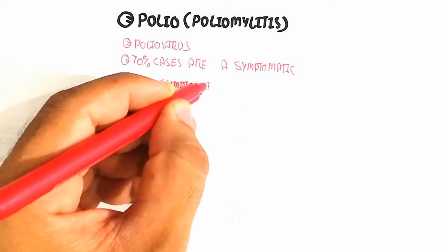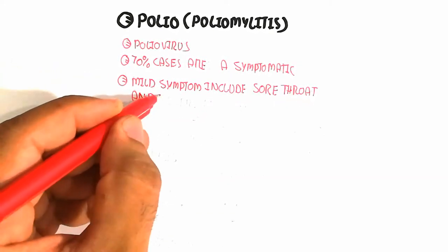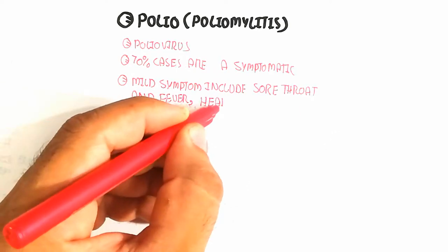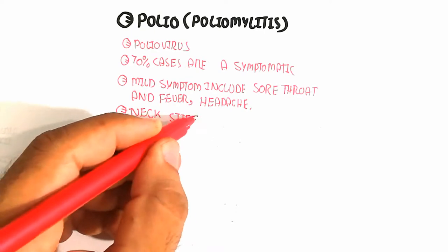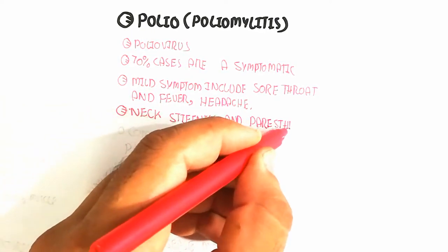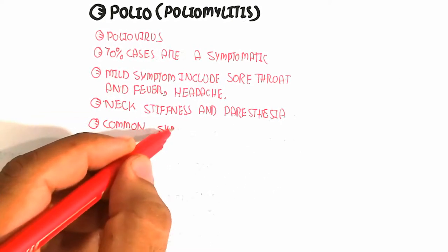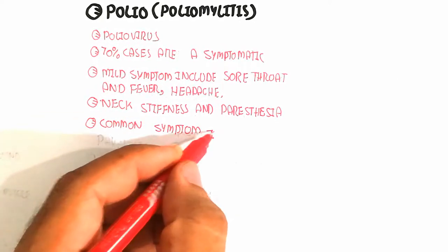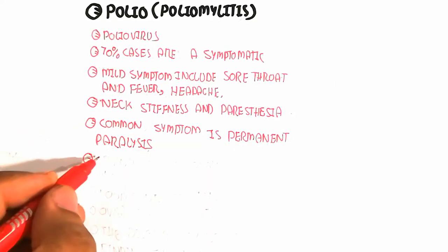70% of cases are asymptomatic, meaning they do not show symptoms. Mild symptoms include sore throat, fever, headache, neck stiffness, and paresthesia. A common symptom is permanent paralysis. The virus transmits through person to person and food contamination, oral to oral route.